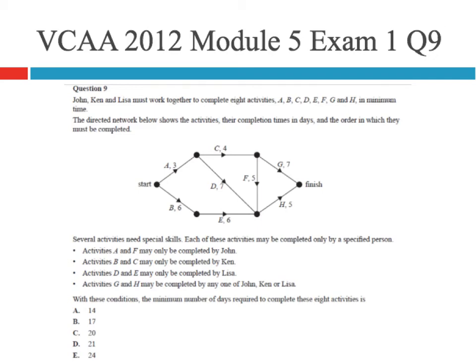In this video we're going to run through question 9 from the 2012 module 5 networks exam. This is quite a tricky question because it's not only about minimum completion time, so critical paths, but it also has restrictions placed on who can do what activities.